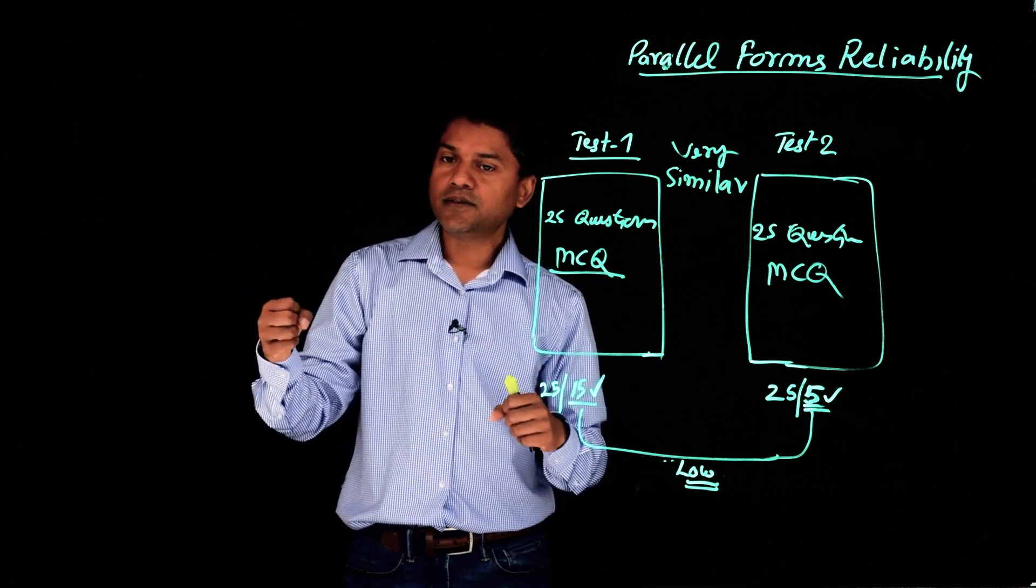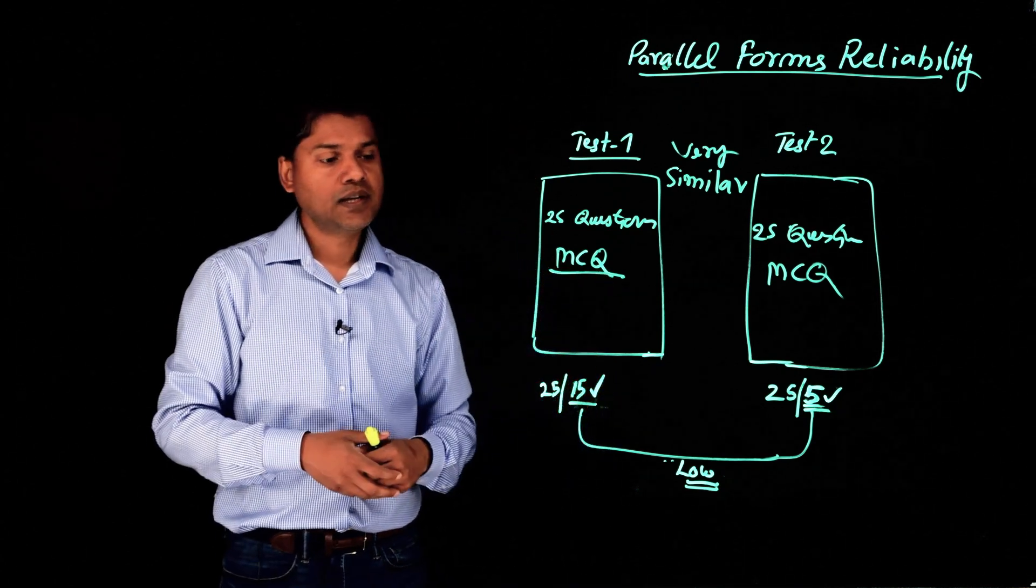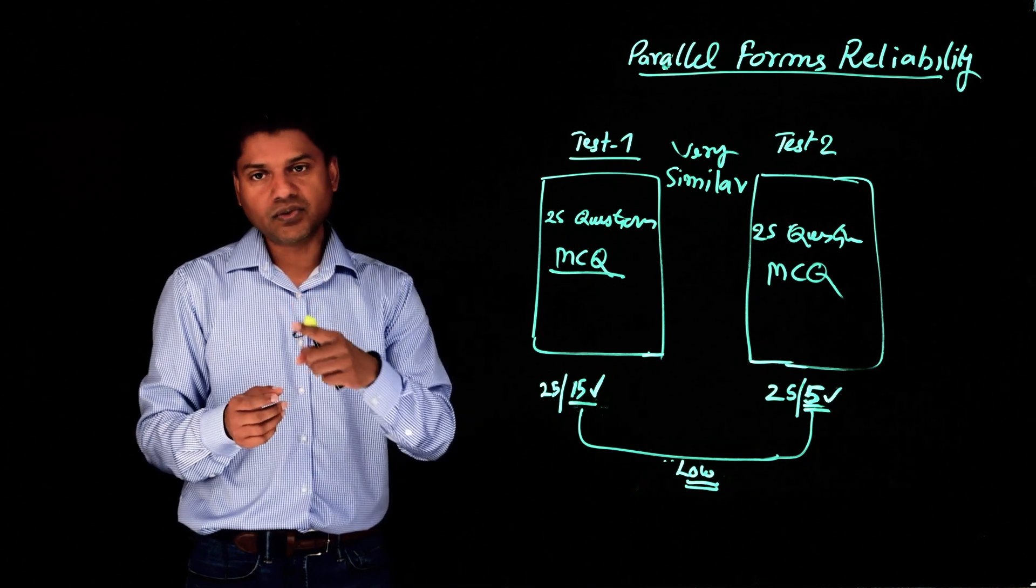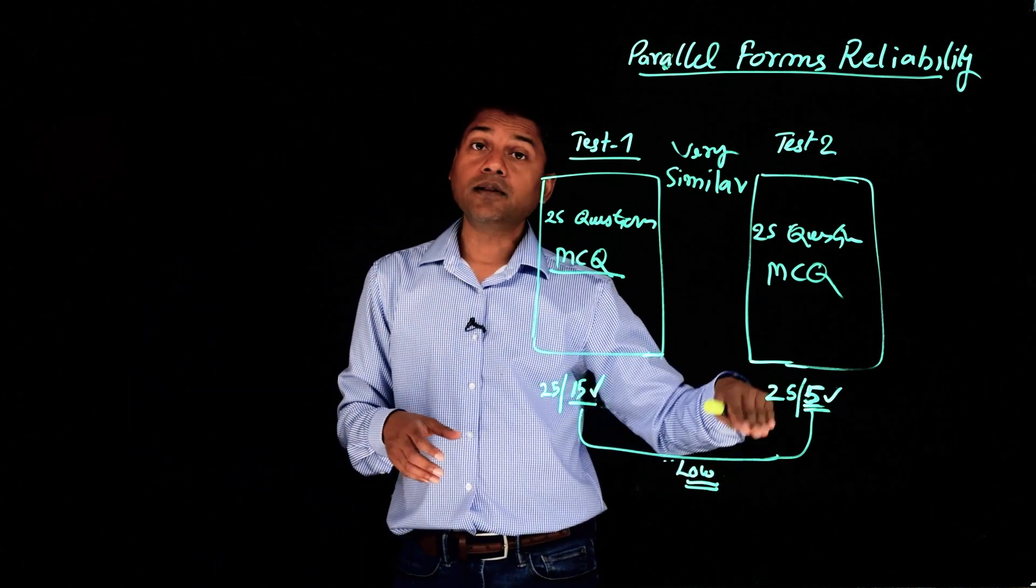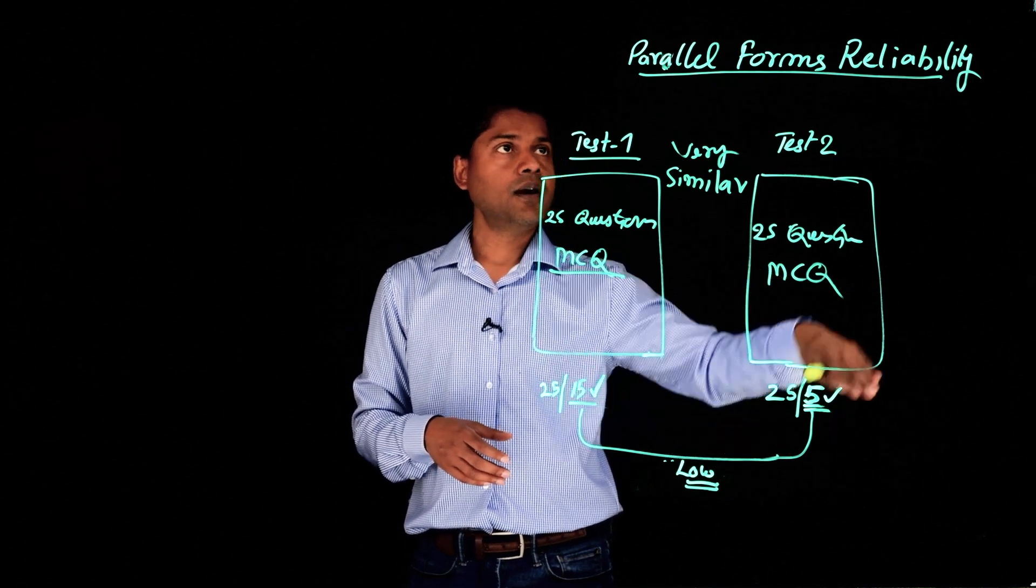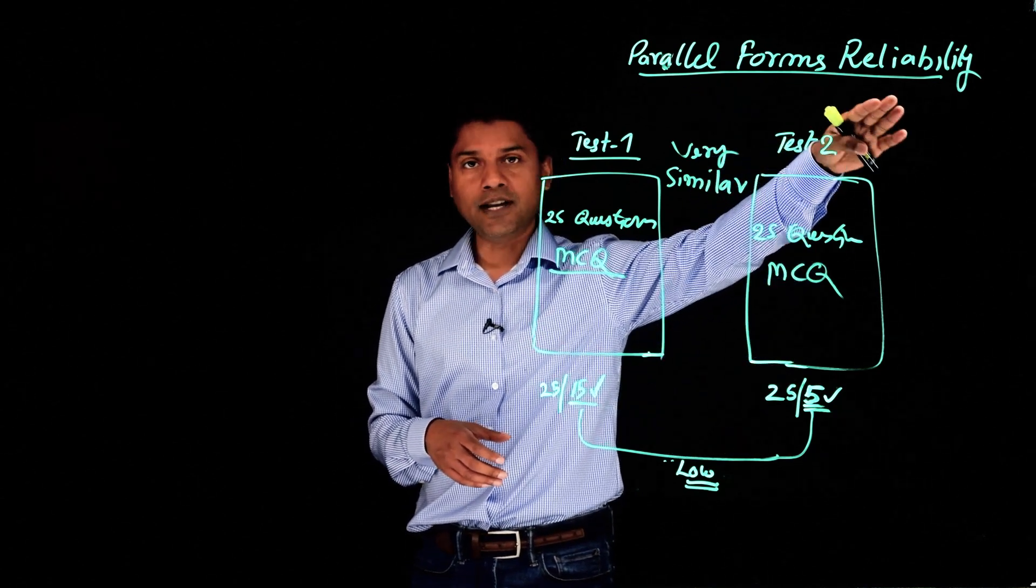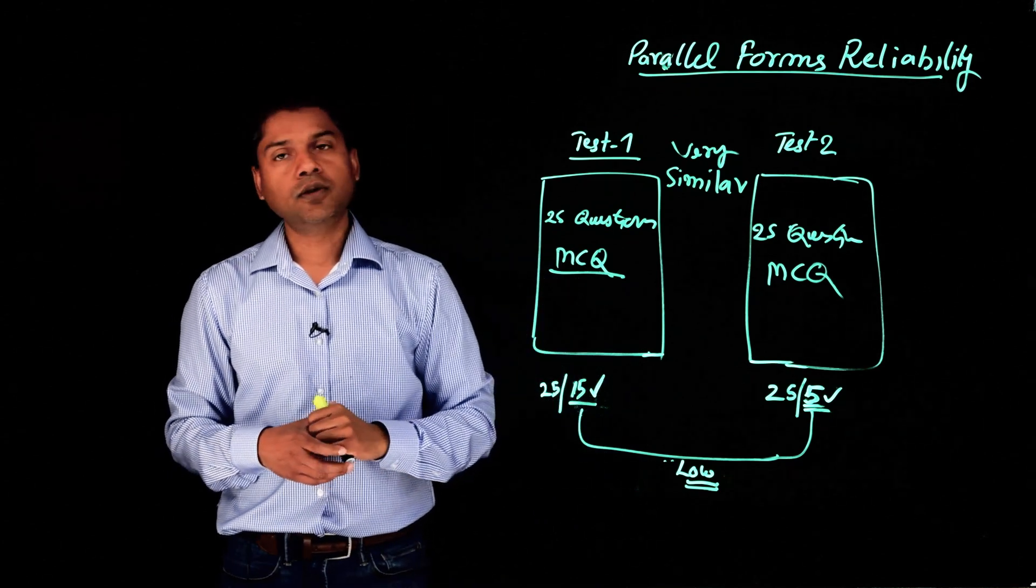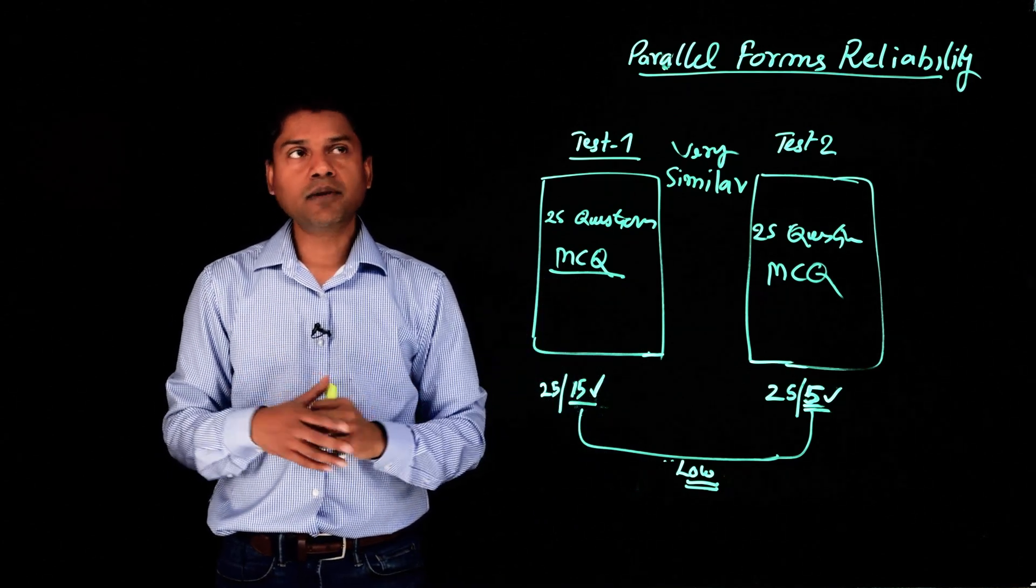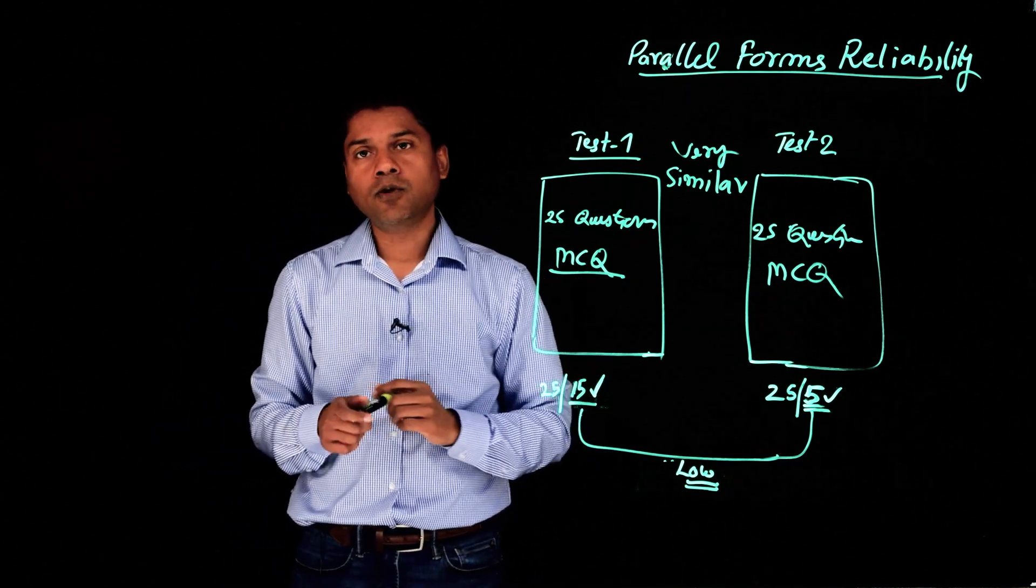And then we give this test to same participants, and then we see the consistency of the scores. We compare the scores. The higher the consistency, the higher the parallel forms reliability. The lower the score, the lower the reliability. So that's briefly about parallel forms reliability.